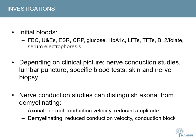Moving now onto investigations, which are guided by history and examination. Initial blood tests in all patients presenting with a polyneuropathy generally include: a full blood count, urea and electrolytes, ESR, CRP, glucose, HbA1c, liver function and thyroid function, B12 and folate, and serum electrophoresis.